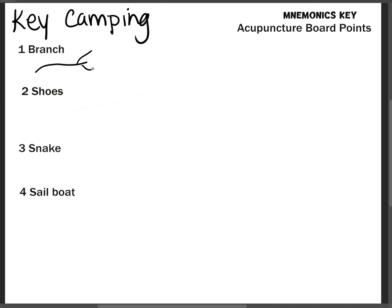So you have a branch and then we have the shoes, and a snake. It's hard to write with this pen. Snake, let's try that again. How about that? Yeah, that's a snake. And then a sailboat with four because it looks like a sail, looks like a four.